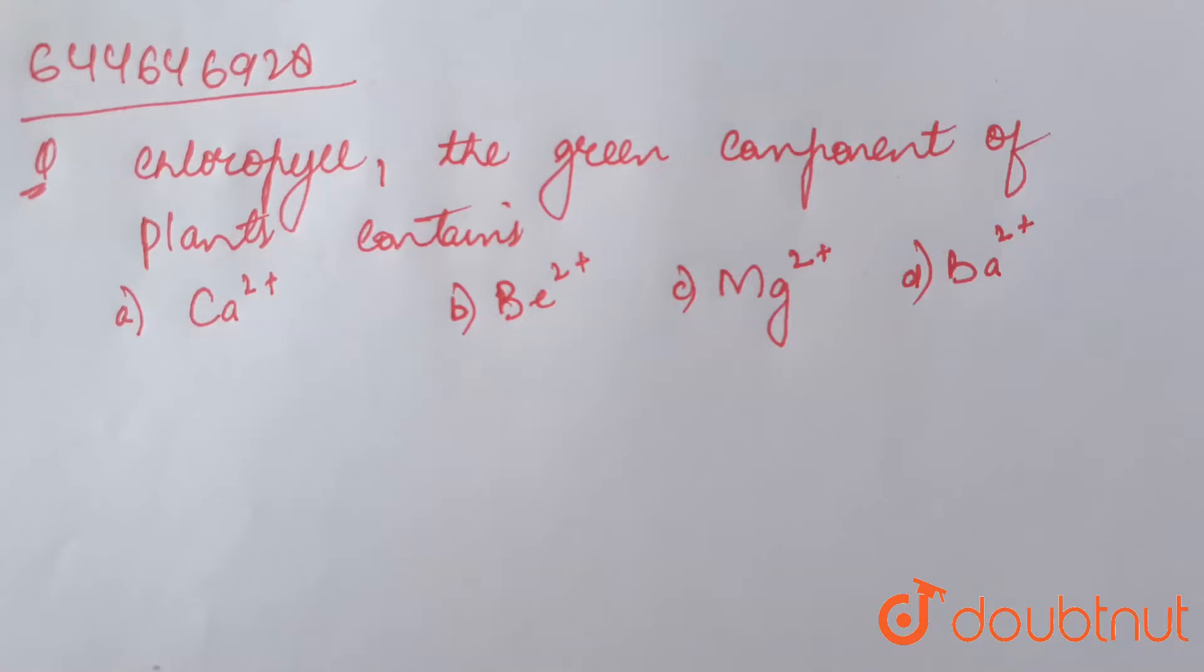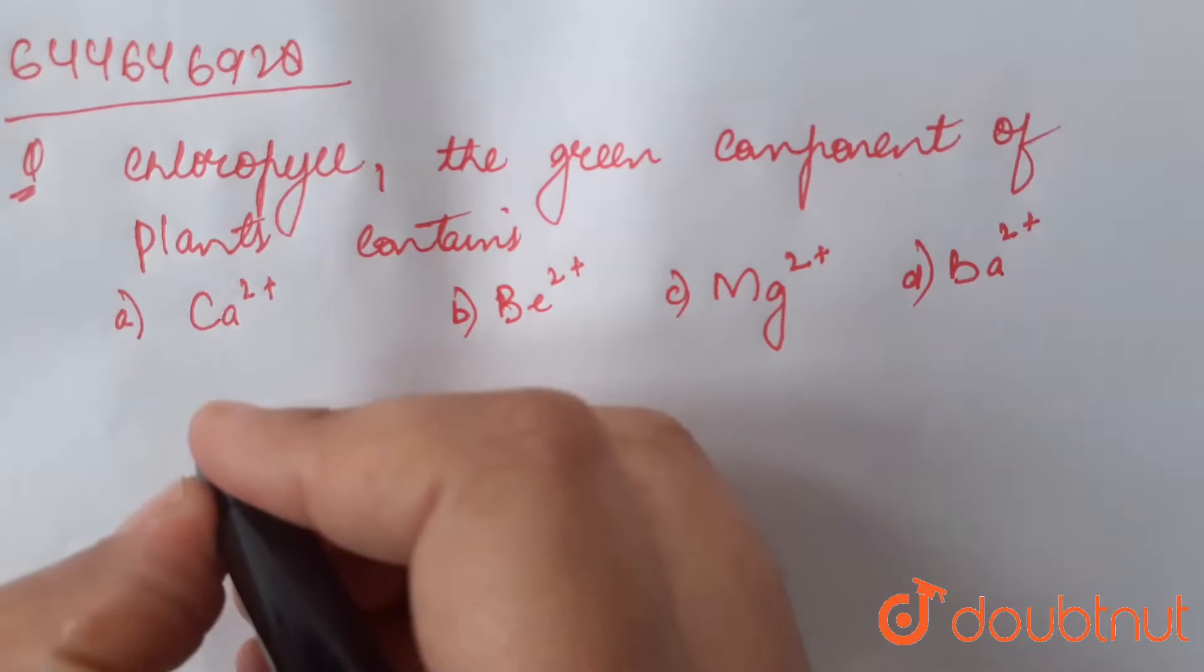Chlorophyll, the green component of plants, contains: (a) Ca2+, (b) Be2+, (c) Mg2+, (d) Ba2+. Chlorophyll is the green pigment in the green leaves of a plant.